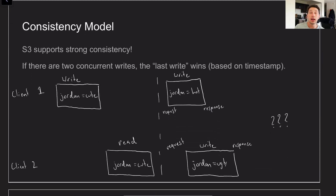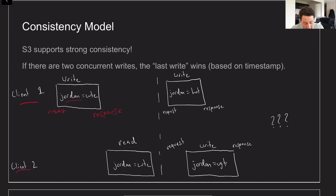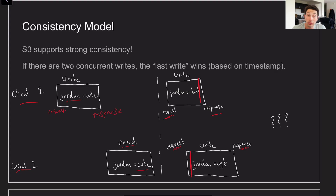In terms of the consistency model of S3: this hasn't always been the case, but S3 now supports strong consistency — meaning if a client writes and then someone else reads right after that write completes, any subsequent read is going to see the up-to-date data. That said, if you have two concurrent writes — where concurrency means the request/reply cycles are interleaved — you don't actually know whether the eventual value will be one result or the other. Keep in mind this is an oversimplification; in S3 you're writing files not key-value pairs, but each file is associated with a key which is its path name.